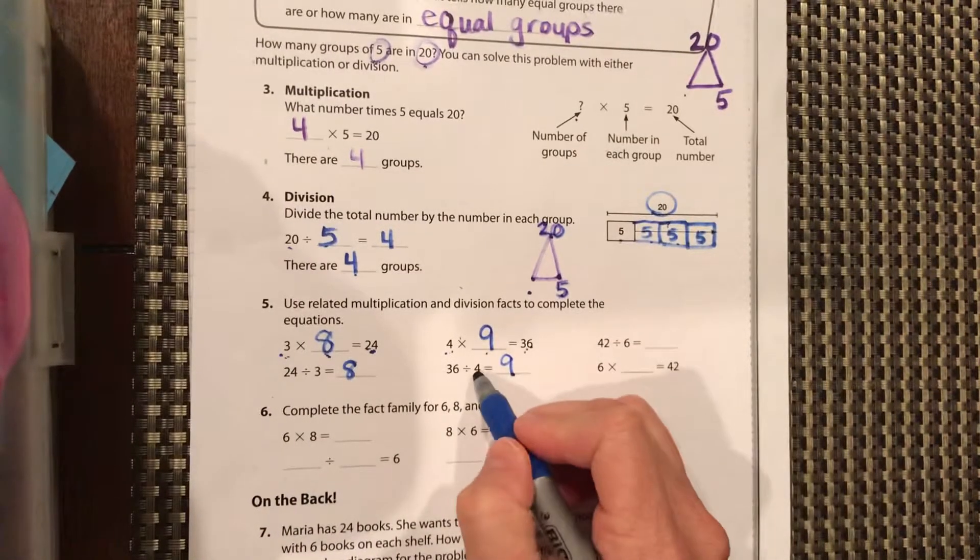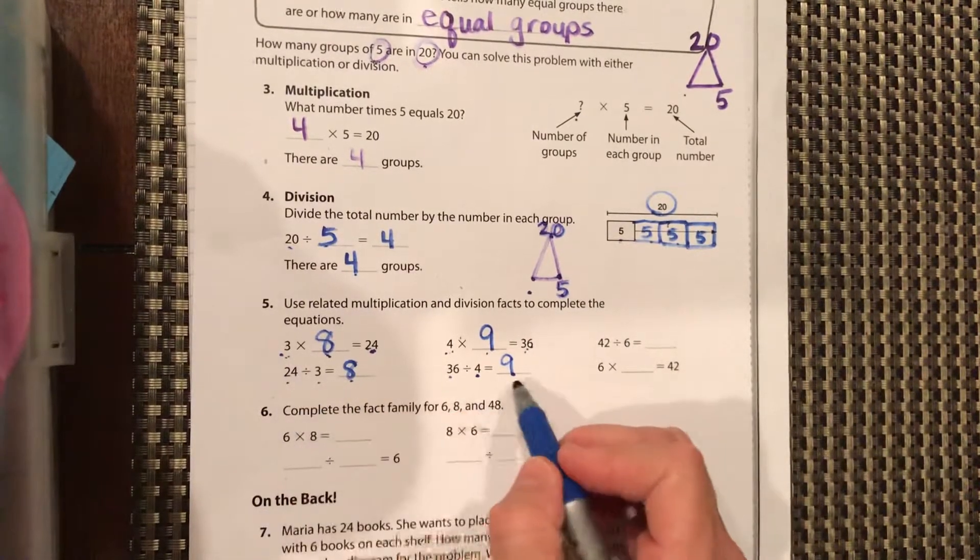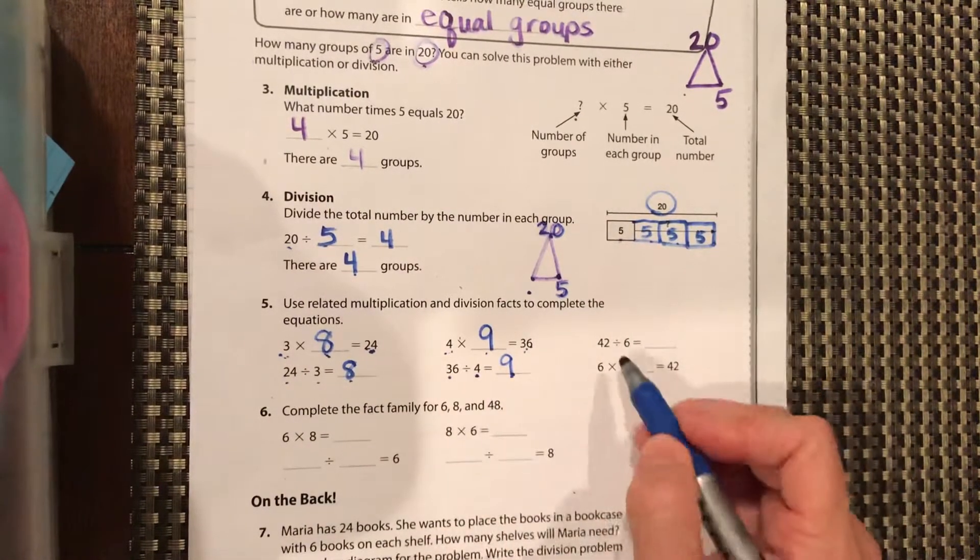Ask yourself, what times four equals 36? Make sure you check. Eight times three equals 24, nine times four equals 36.